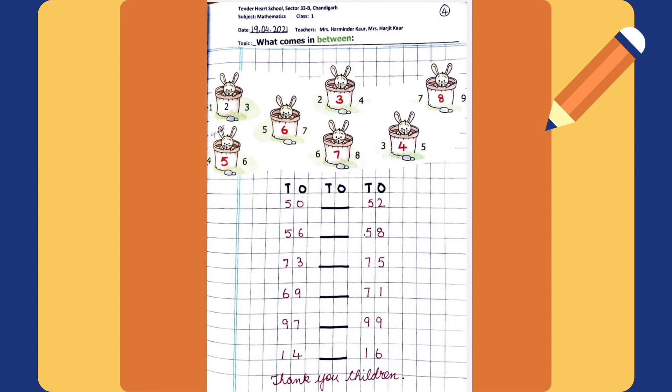Now, what comes in between? Few examples are given below. What comes between 1 and 3? 2. What comes between 2 and 4? 3. What comes between 7 and 9? 8. What comes between 5 and 7? 6.